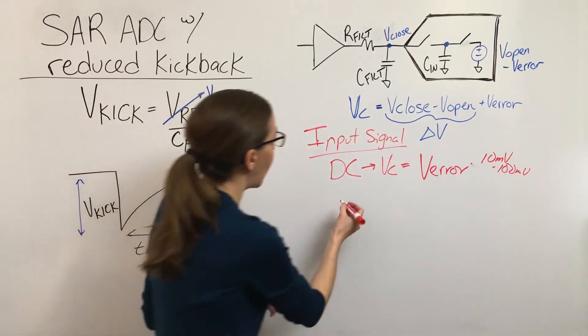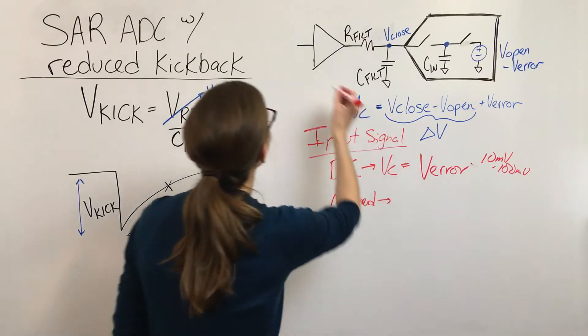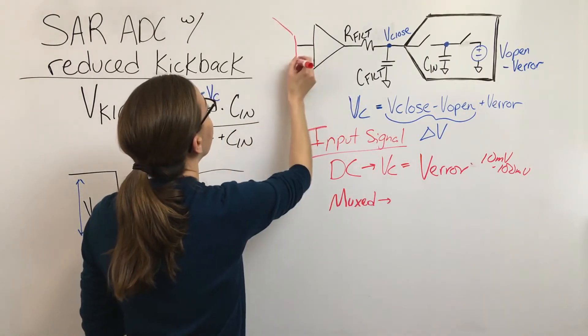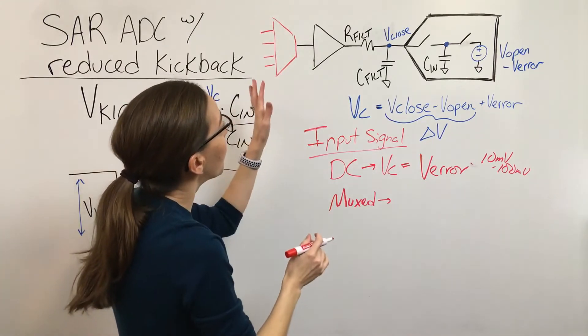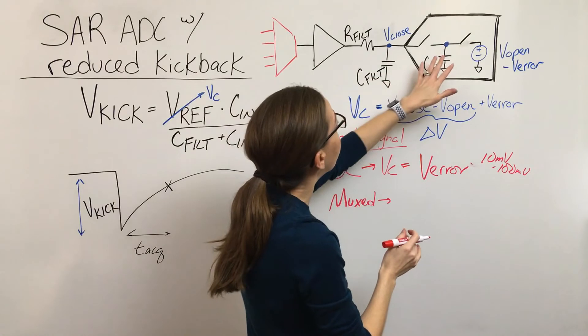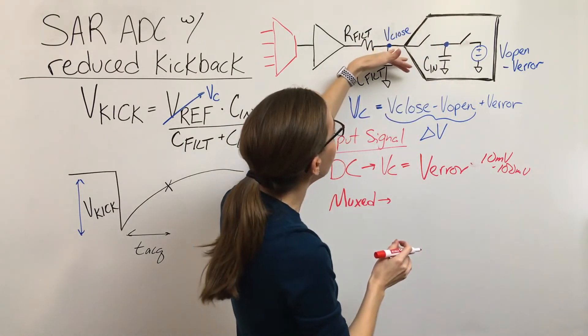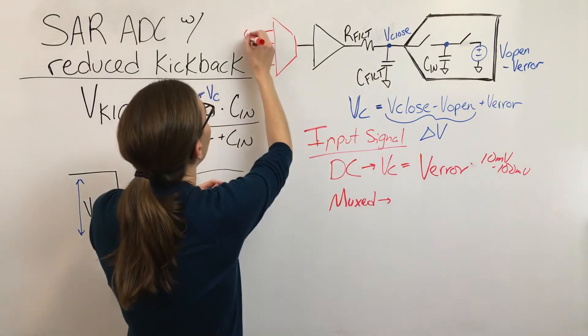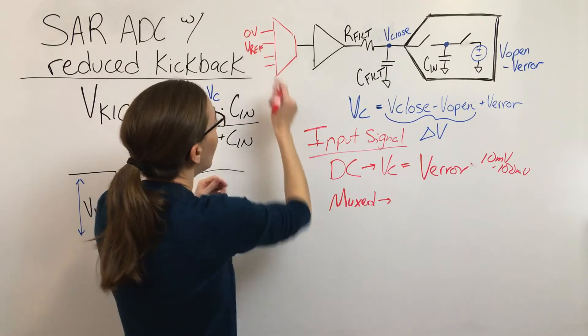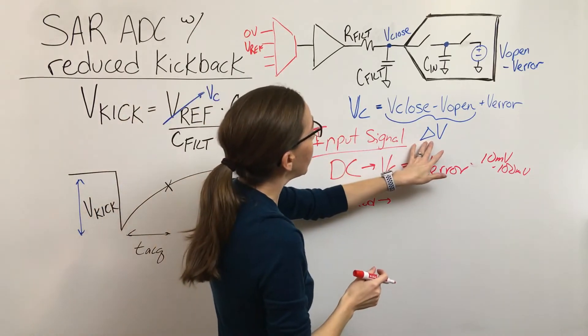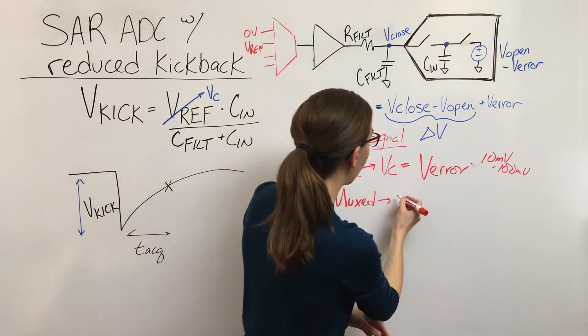Our worst case, if you had a muxed input. So the voltage could change dramatically from the time when the switch opens to when the switch closes again. It could swing from zero volts all the way up to full scale. So in this case you have a potential to have a voltage difference of VREF. It could be that big.